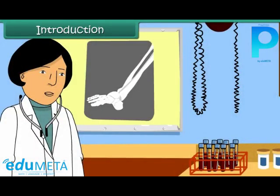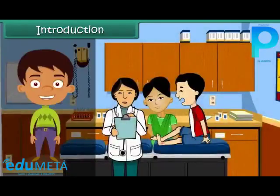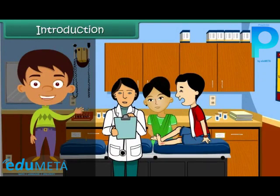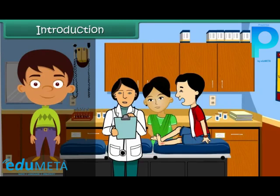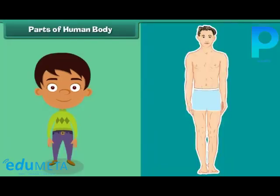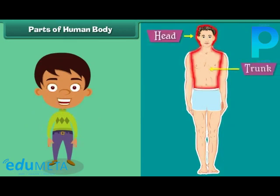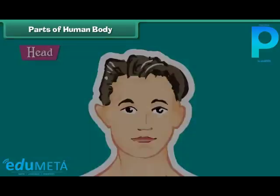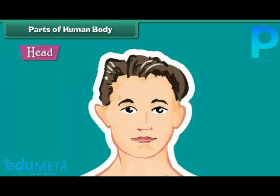She prescribes medicines and advises bed rest for four days. In this lesson, you will learn about the different organ systems of our body and their functions. The human body is divided into three main parts: head, trunk, and limbs. The head is the uppermost part of the body. Eyes, ears, nose, and mouth are located on it.